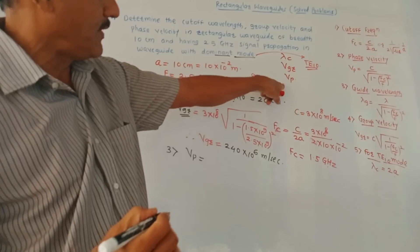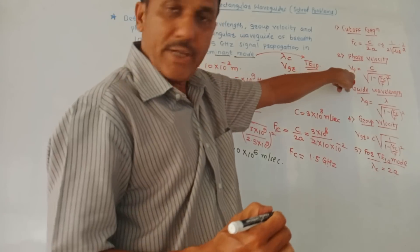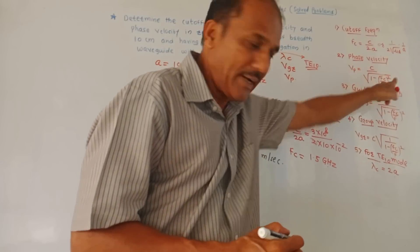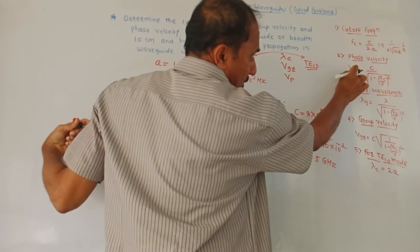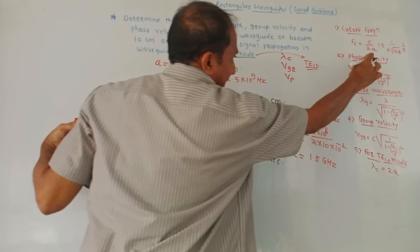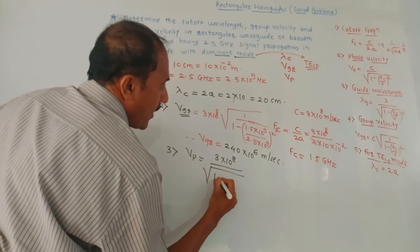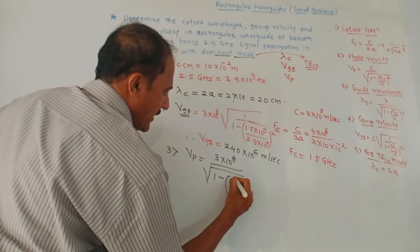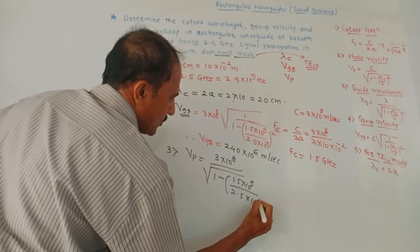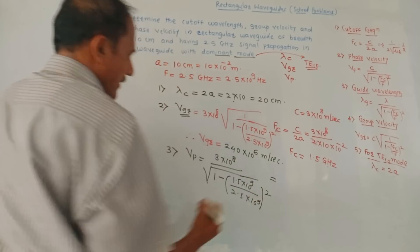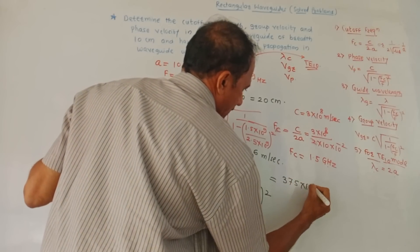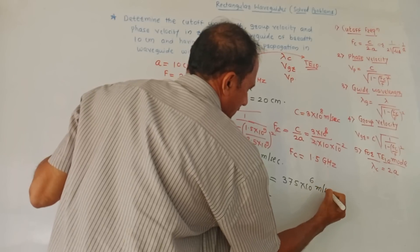Then third part: phase velocity. Phase velocity is vp. We have a ready-made formula: vp equals c upon square root of 1 minus (fc/f) squared. Let us put the values: vp is 3 × 10⁸ divided by square root of 1 minus (1.5 × 10⁹ divided by 2.5 × 10⁹) squared. The answer of vp is 375 × 10⁶ meters per second.